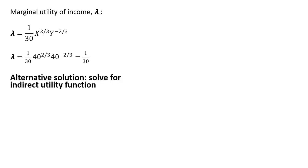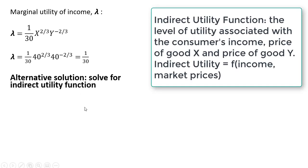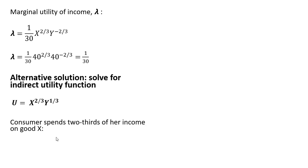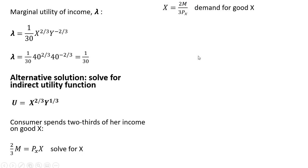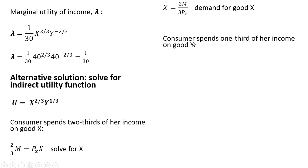Let's look at the alternative solution. Here we're going to solve for the indirect utility function. With this utility function, we see that the consumer spends two-thirds of their income on good X — notice that the exponent on X is two-thirds. So two-thirds of income equals the total spending on X, which is the price of good X times units of good X. Solving for X, we get the demand for good X. This is a shortcut for getting demand for good X when dealing with a Cobb-Douglas utility function.